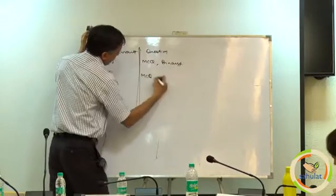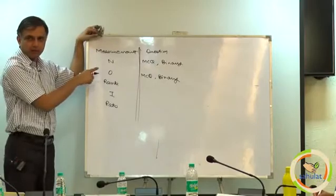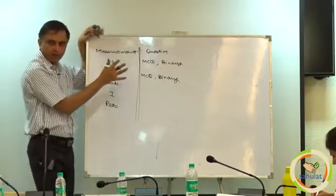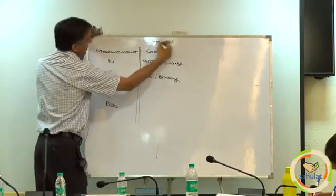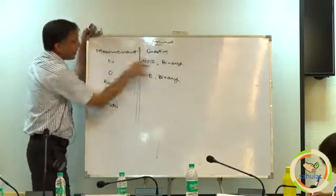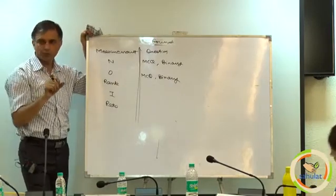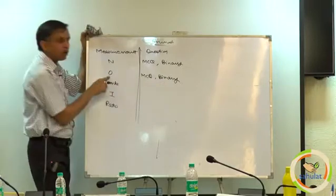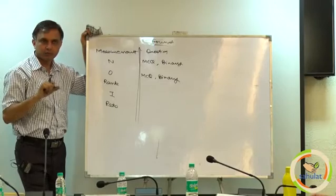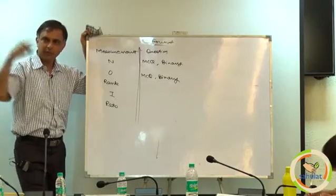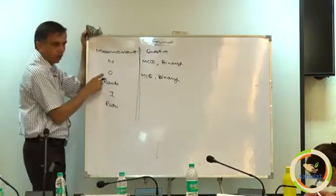Binary is nominal. This is the format of question and this is the measurement. Binary nominal examples: gender — male, female; will you purchase again — yes, no. Binary ordinal: what is your income — high or low? Somebody who says high will have more income than low; we can compare, and only two options are there — binary ordinal.